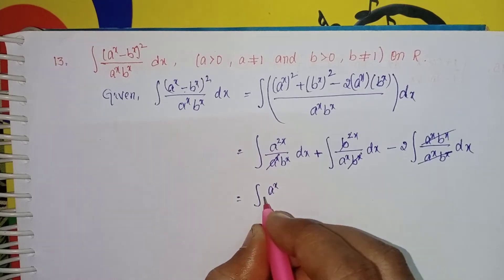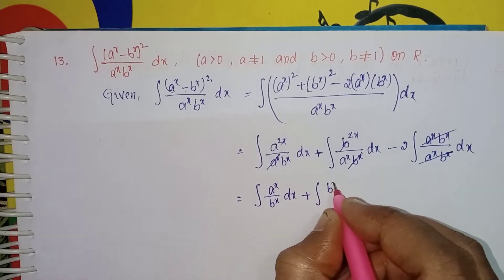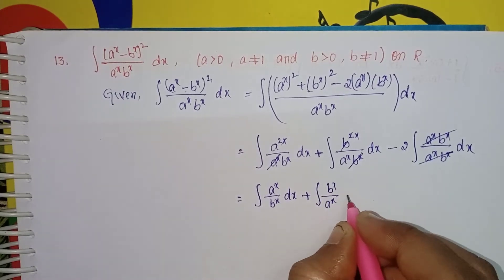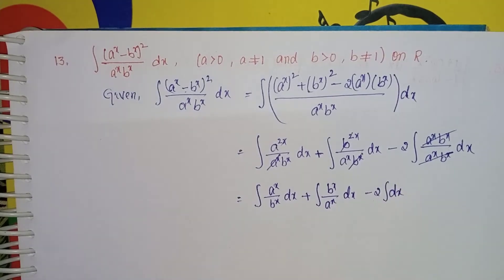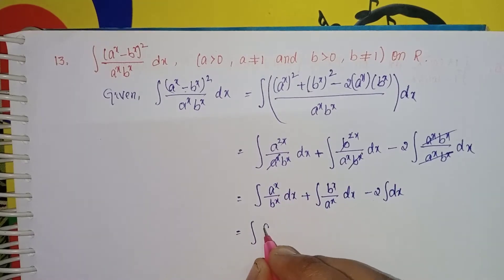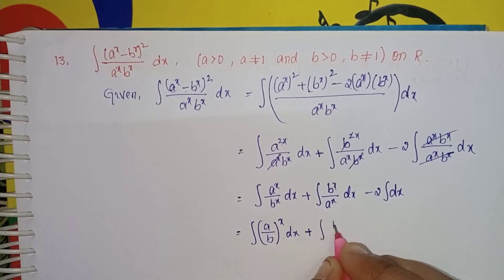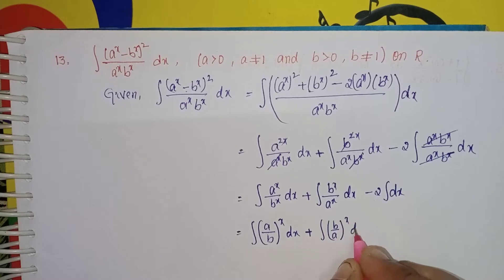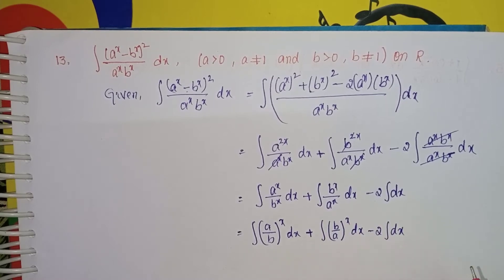What remains is: integral of (a^x / b^x) dx, plus integral of (b^x / a^x) dx, minus 2 times integral dx. Since the powers are the same, you can write these as integral of (a/b)^x dx, plus integral of (b/a)^x dx, minus 2 times integral dx.